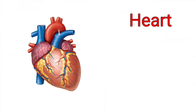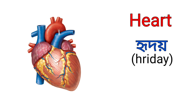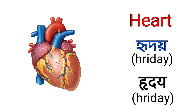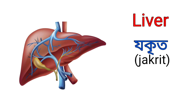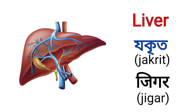Heart. It's called Hridoi in Assamese — that means Koliza — and it's called Hridoi in Hindi. Liver. It's called Jokrit in Assamese and it's called Jigar in Hindi.